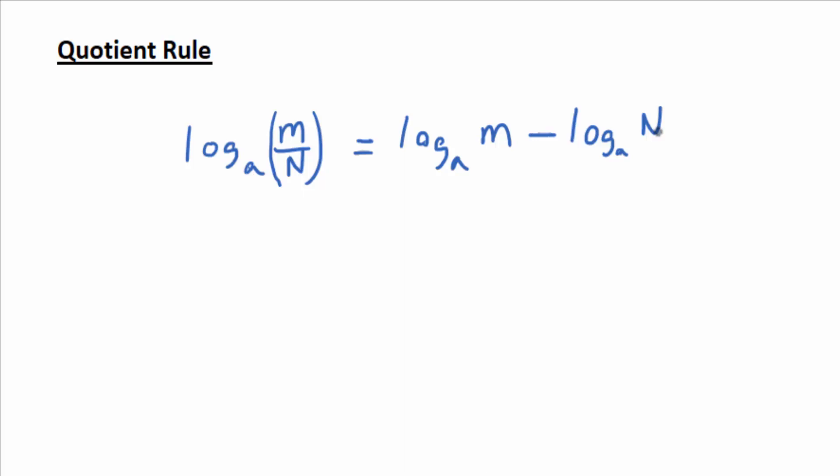A quotient is associated with actually subtraction. It can be associated with repeated subtraction. So log base A of M divided by N is equal to log base A of M. The only difference is there's a minus log base A of N instead of a plus on the right side.